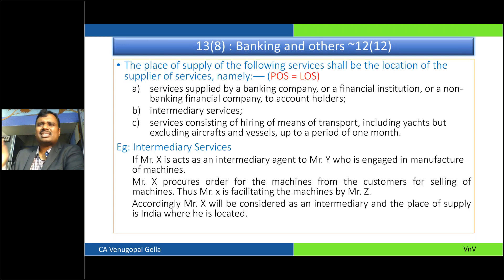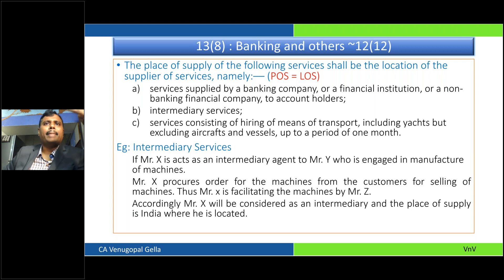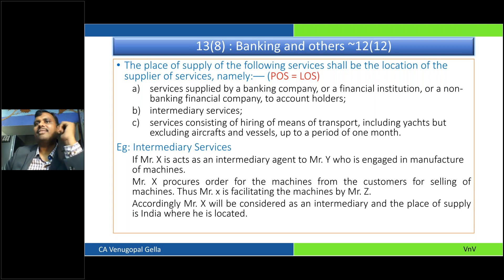Section 13(8) — banking services. There is a slight departure from Section 12(12). In case of Section 12(12), we said the place of supply is location of recipient. But here, for the following three services — banking services supplied by a banking company to its account holders, intermediary services, and services consisting of hiring of means of transport (excluding aircraft and vessels) up to one month — the place of supply is the location of the supplier.